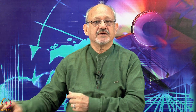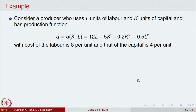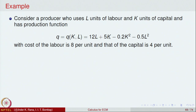Let us apply these criteria to an example in economics. Consider a producer which uses L units of labour and K units of capital to produce a product. The production function is Q(K, L) = 12L + 5K − 0.2K² − 0.5L². K is the capital and L is the labour. The cost of labour is 8 per unit and each unit of capital investment is 4 per unit.